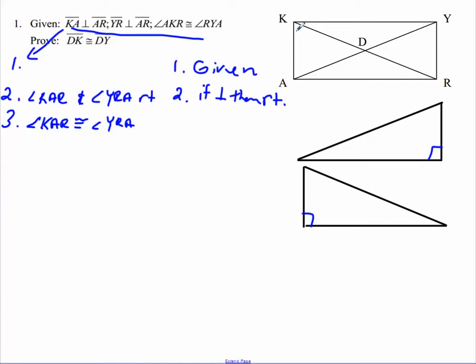I'm also given that these angles are congruent as well. So I'm going to use that. So this angle here is congruent to this angle here. I need one more piece. It's going to be this guy right here. I'm going to establish that AR is congruent to AR.